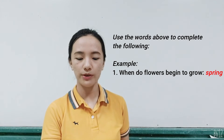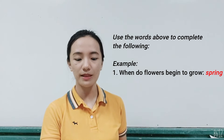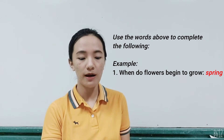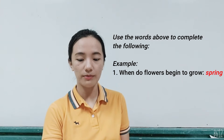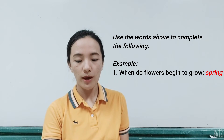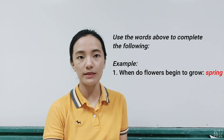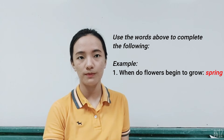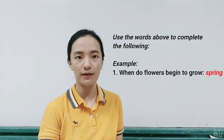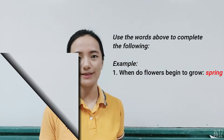Next instruction: use the words above to complete the following. Choose the words above and write them on the blank. For example, number one: 'when the flowers begin to grow' — the correct answer is 'spring.' Write it on the blank. Now let's move on to part two of your activity.